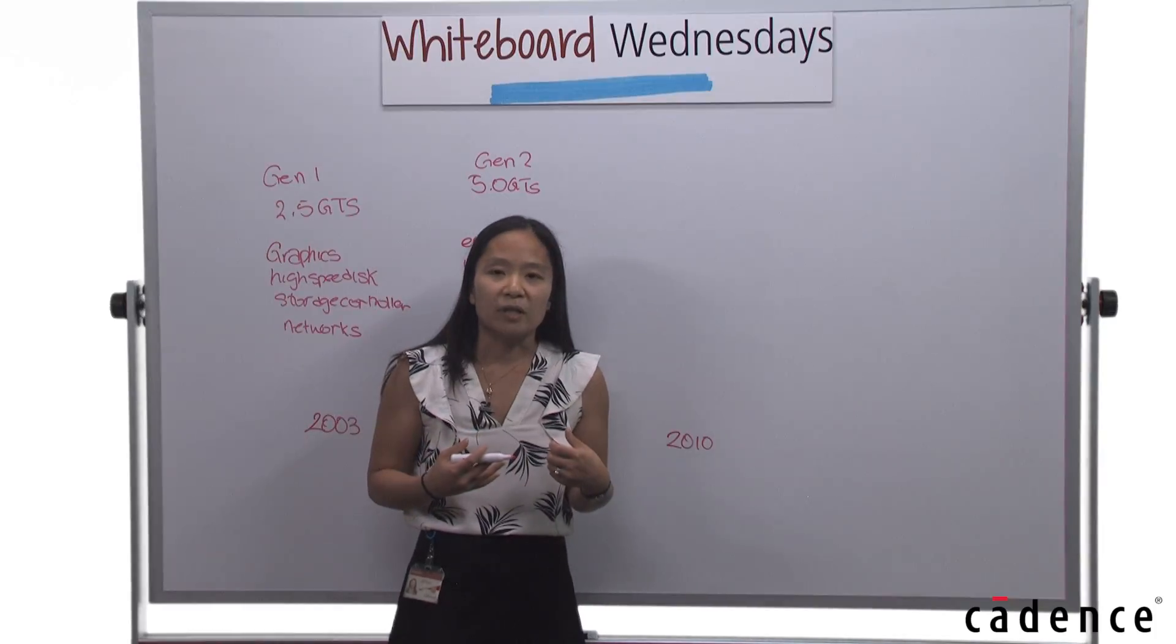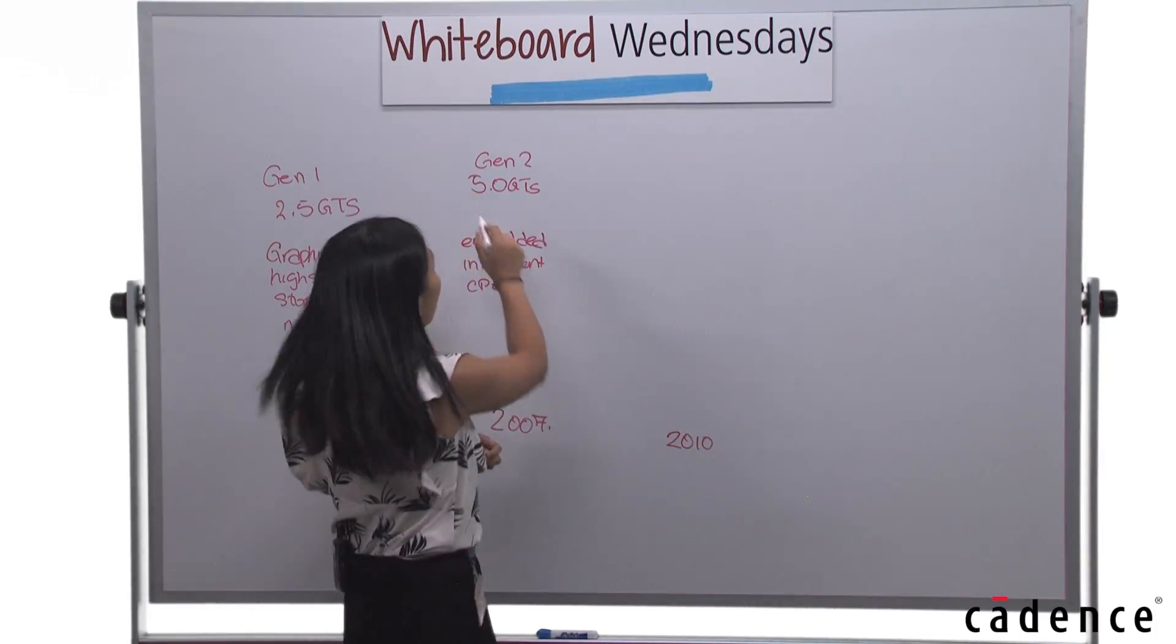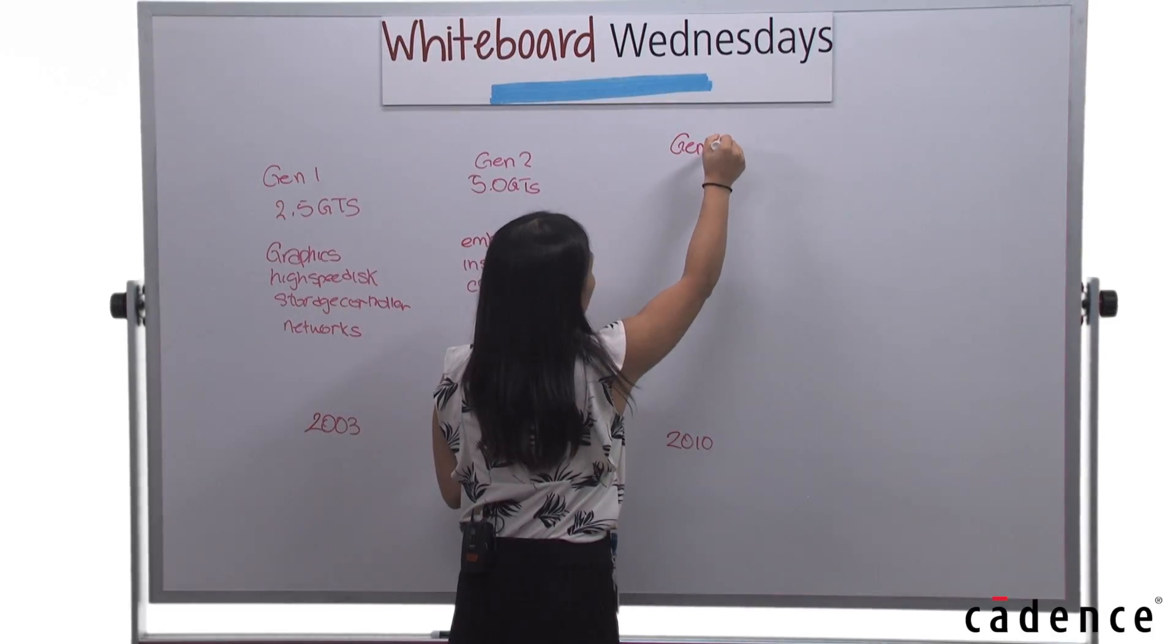PCI SIG at that point in time was aiming once again to double the bandwidth from 5 gigatransfers per second to 10 gigatransfers per second.